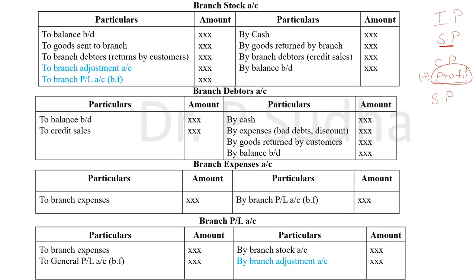This format I have already explained. The same format that we follow under stock and debtors method when goods are sent at cost price — the same ledger accounts we are going to open here: branch stock account, branch debtors account, branch expenses account, and branch profit and loss account. The difference between cost price and selling price is profit, and we have to give adjustment for this profit alone.